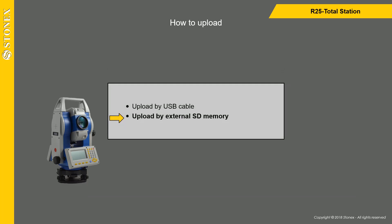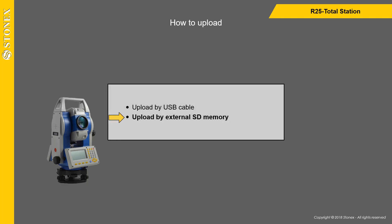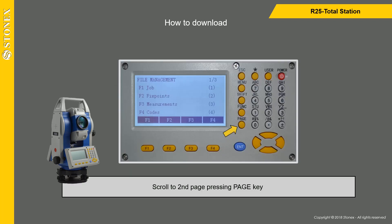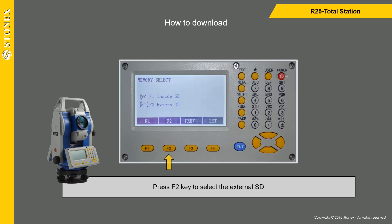If you want to upload using the external SD memory, scroll to the second page by pressing the Page key. Press F3 to select the memory select option, then press F2 to select the external SD, and press F4 to set it.